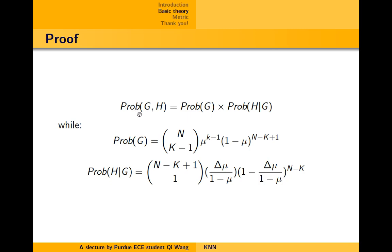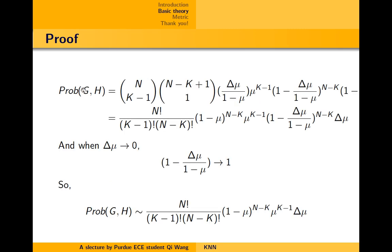So, the joint probability of G and H can be calculated like this. Well, the probability of G is like this, and the conditional probability of H given G is like this. We multiply them together, and we get the joint probability of G and H like this. Also, as Δμ approaches to 0, the (1-Δμ)/(1-μ) approaches to 1 very quickly. So, we get this nicer form of the joint probability G and H like this.